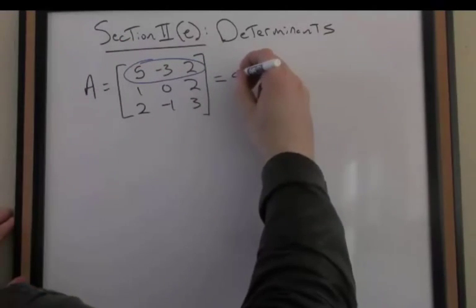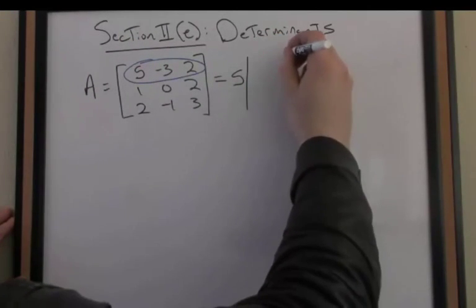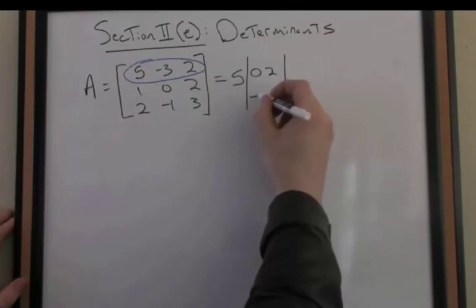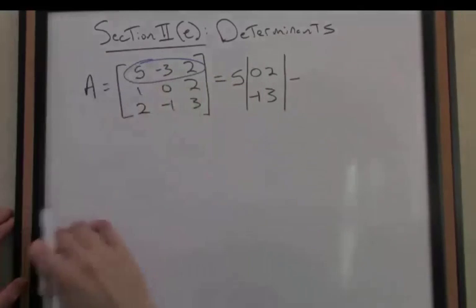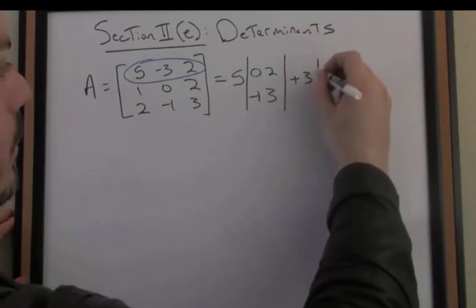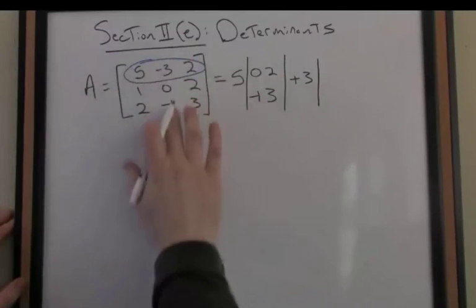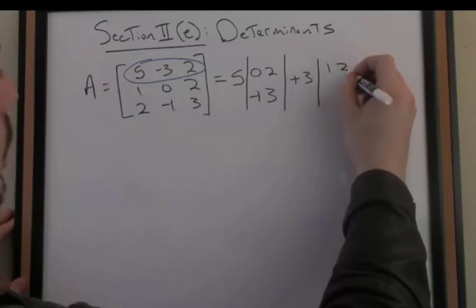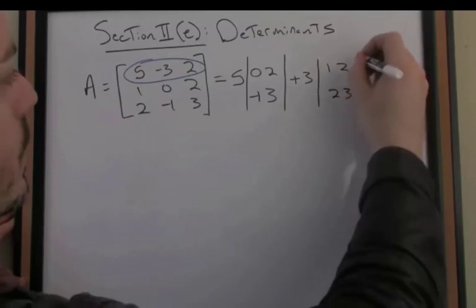So I take the number 5, and then I multiply by the determinant of the corresponding submatrix, which is now 0, 2, negative 1, 3. And then I go minus, I alternate signs, so check this minus minus 3 goes plus 3, so we flip that. And then I remove again row 1, column 2, and I just plug in the determinant here, 1, 2, 2, 3 of the corresponding submatrix.